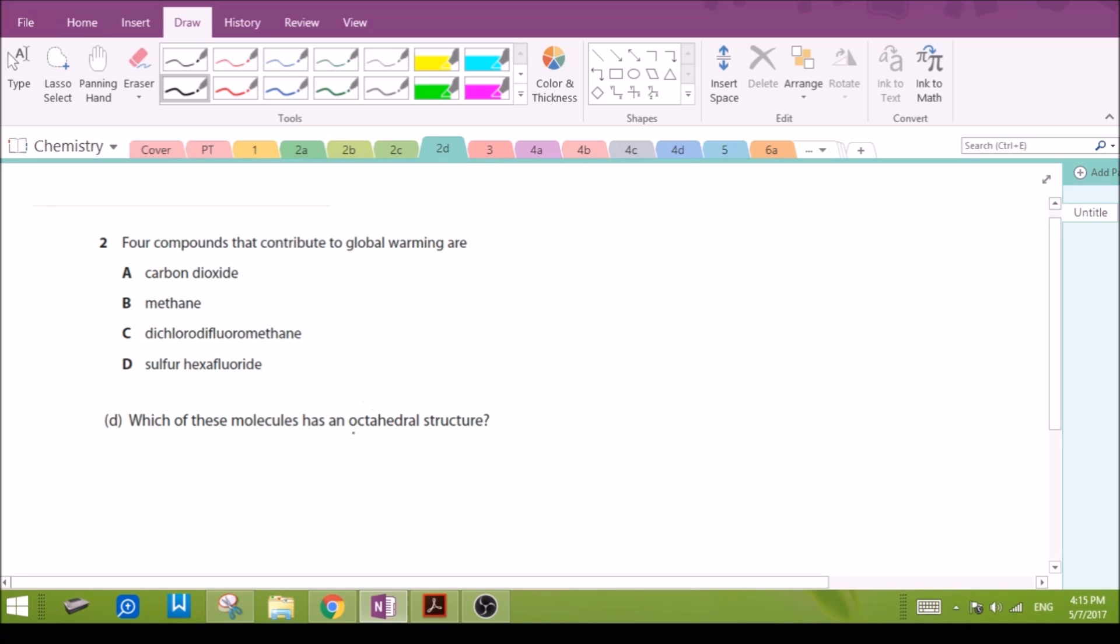Two part D: Which of these molecules have an octahedral structure? As we went through in two part A, let's do a quick molecular geometry again. Carbon dioxide is linear, methane is tetrahedral, dichlorodifluoromethane is also tetrahedral. The one that's octahedral is sulfur hexafluoride. Imagine four to be in a plane and then we have one fluorine on top and one fluorine below, so this is the octahedral structure, option D.